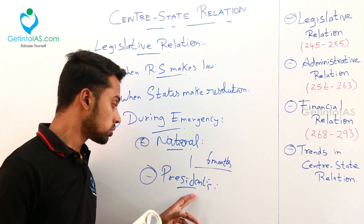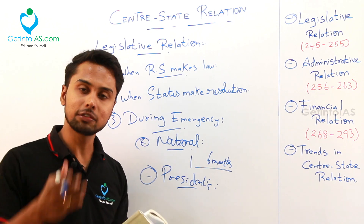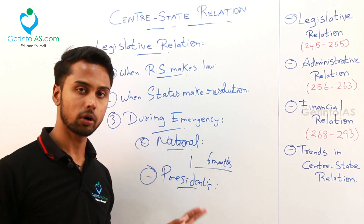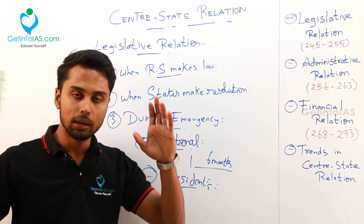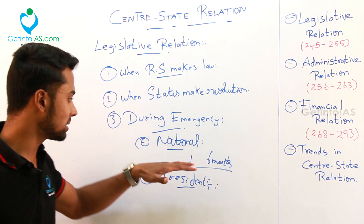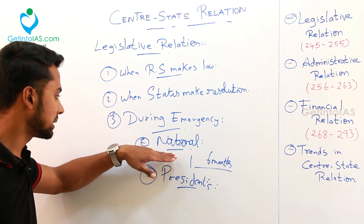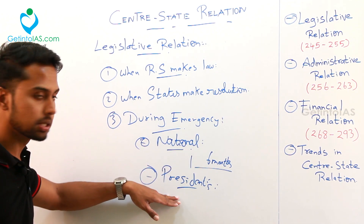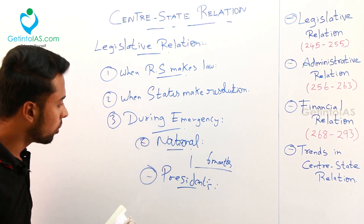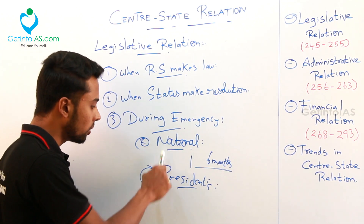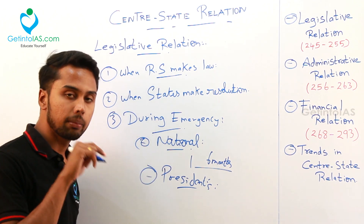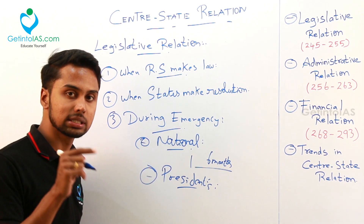For federalism, we have some certain features — like two governments, separation of powers, and integrated judiciary. India is having all the features of this federal form of government.